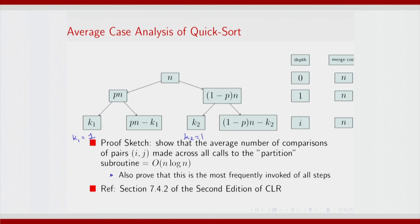Similarly, for the other side let us take the special case that k₂ equals 1. This will mean one element to the left and remaining elements to the right in both the left and right branches. It is possible that even this kind of splitting holds for some number of iterations, but finally you go back to some fixed proportion again. So the average case is basically an interleaving of fixed proportion and worst case.